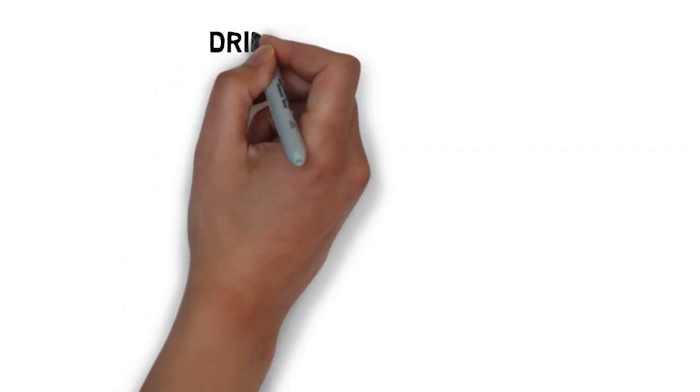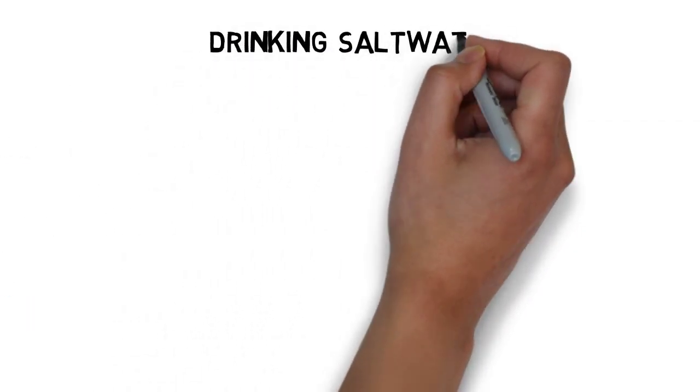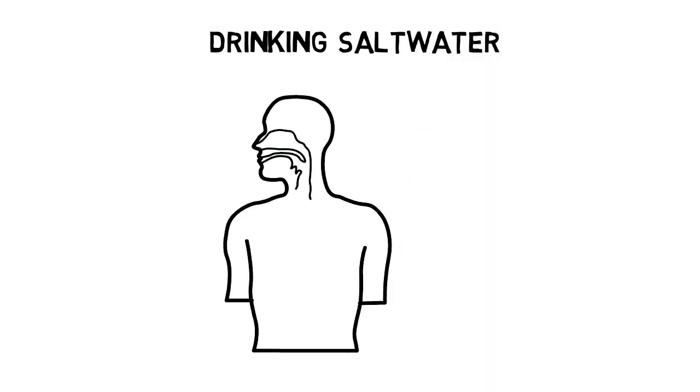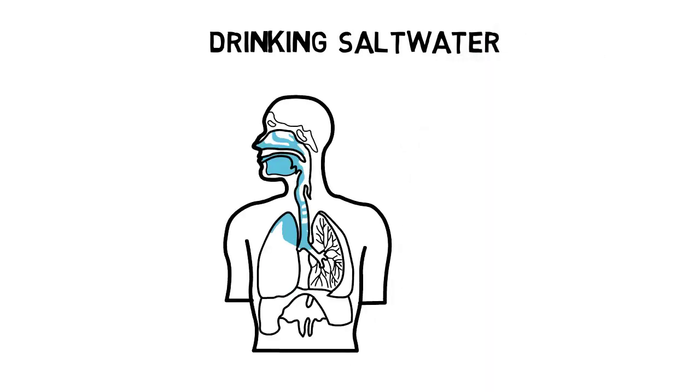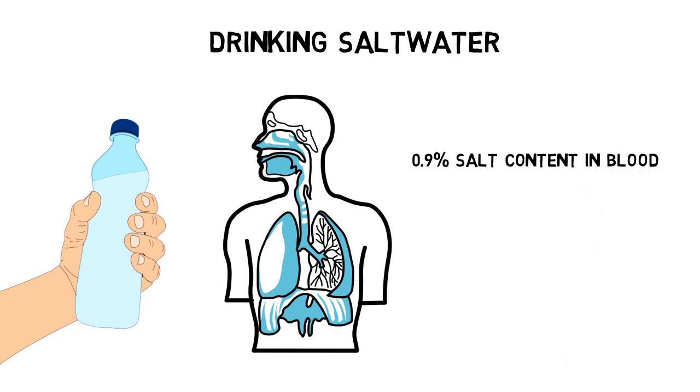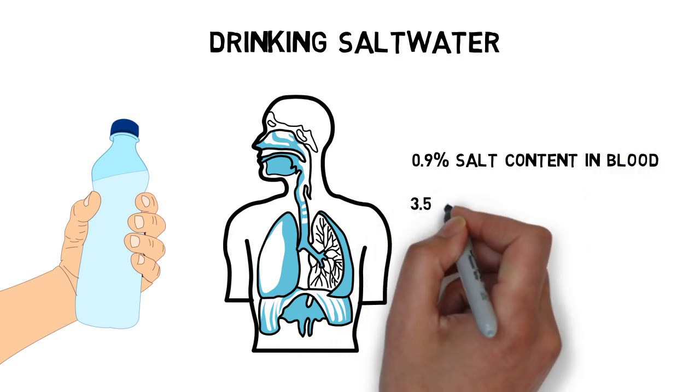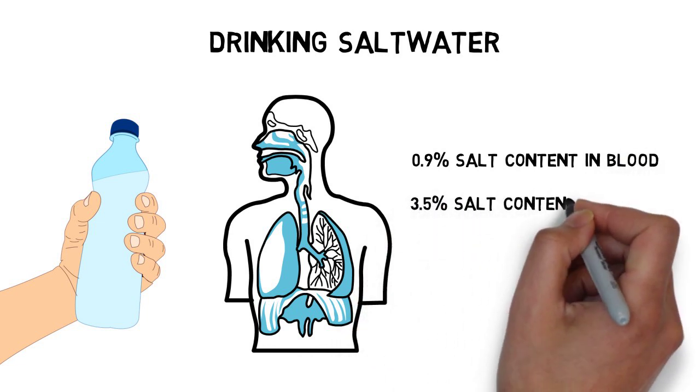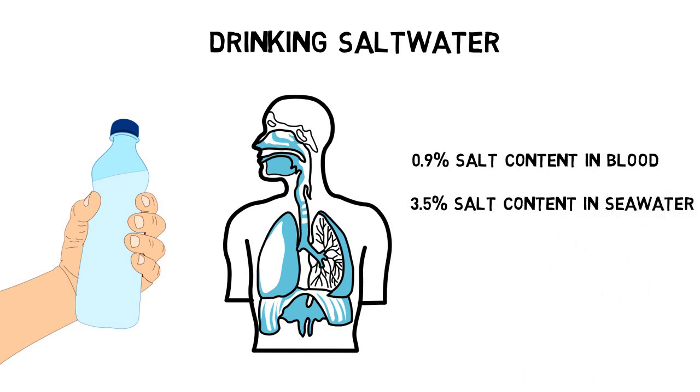Drinking salt water to stay hydrated is counterproductive. The renal system of humans actively regulates the sodium chloride in blood with a particular rate of 0.9%. As seawater has a salt content of 3.5%, the body tries to reduce the sodium and excretes more water than we could drink. The result is dehydration.